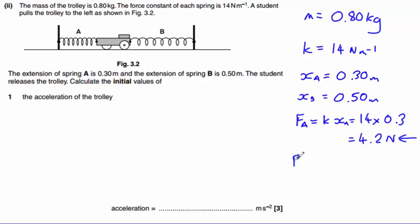Force B, which will be acting in the opposite direction, equals K times XB. So that's 14 times 0.5, which will be 7.0 newtons. This force will be acting to the right.